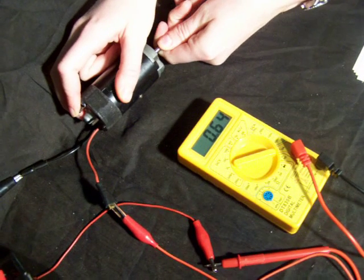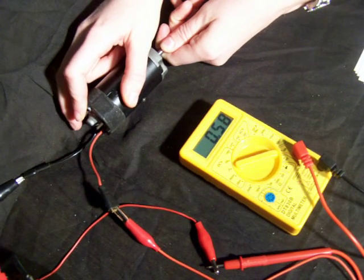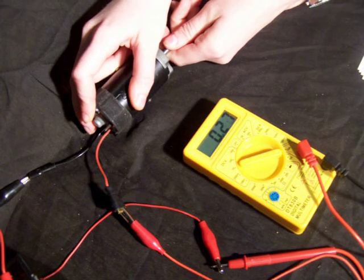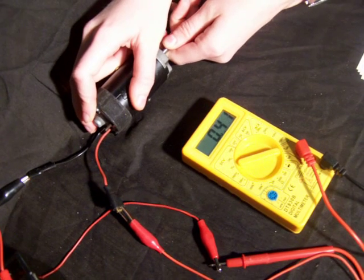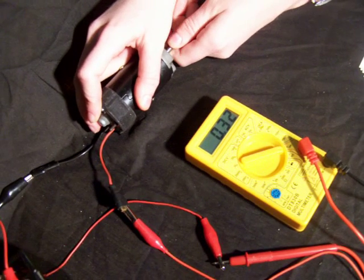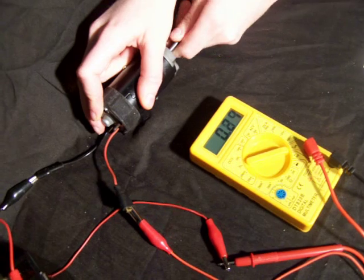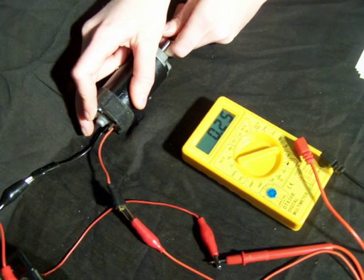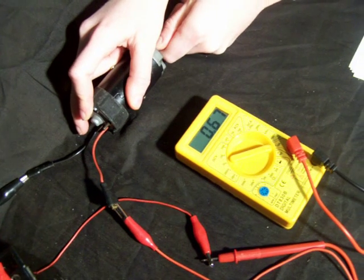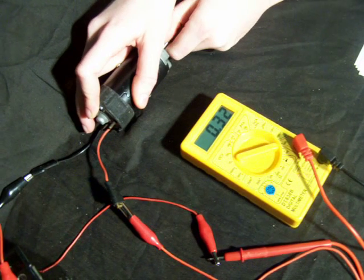Many motors have an amp reading for a stall that shows the amount of amps the motor will try to use should you completely stop the motor. Your wiring and controls should be capable of handling this amount of current even if you don't anticipate that your motor will ever get into a stall condition.